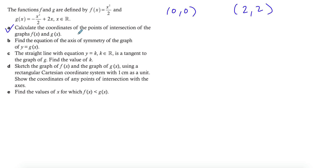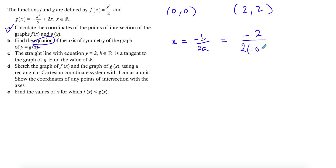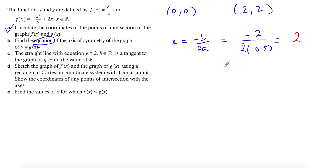Part b asks for the equation of the axis of symmetry for y = g(x). We know the formula is x = -b / 2a. Important: you need to write 'x =' as part of your equation or it's wrong. For g(x), b = 2 and a = -1/2, so we calculate negative 2 divided by 2 times negative 1/2. The negatives cancel and 2 times 0.5 equals 1, giving x = 2. So x equals 2 is the axis of symmetry.